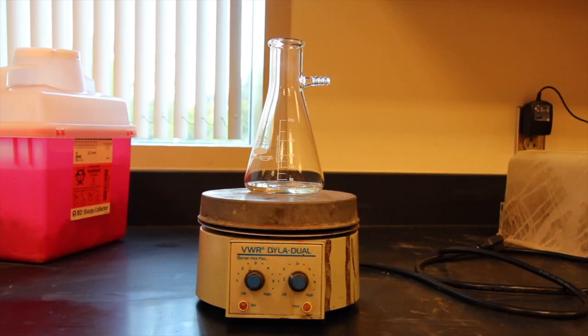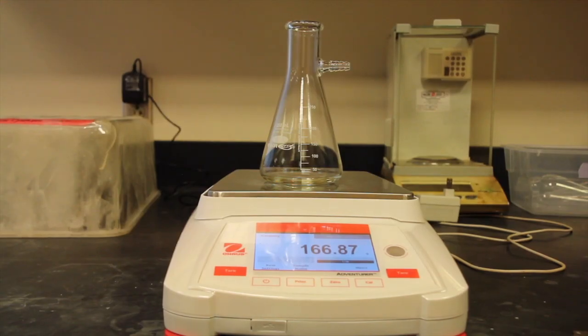Weigh your filter flask and then evaporate off the solvent that passed into the filter flask. Re-weigh the filter flask to determine the mass of triphenylmethanol lost during recrystallization.